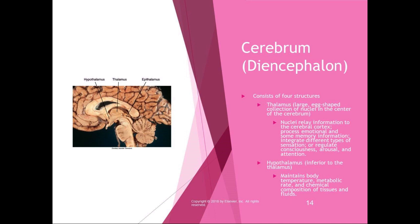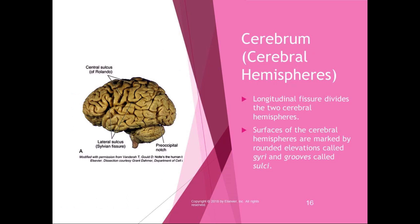The diencephalon includes the thalamus, hypothalamus, epithalamus, and subthalamus — any structure that has the word thalamus in it is part of the diencephalon, and lots of important body functions occur there. The cerebrum itself consists of the two cerebral hemispheres, divided by a longitudinal fissure. The surfaces are marked by rounded elevations called gyri (singular: gyrus) and grooves called sulci (singular: sulcus). Each gyrus and sulcus has individual names, though you won't be responsible for knowing them all.